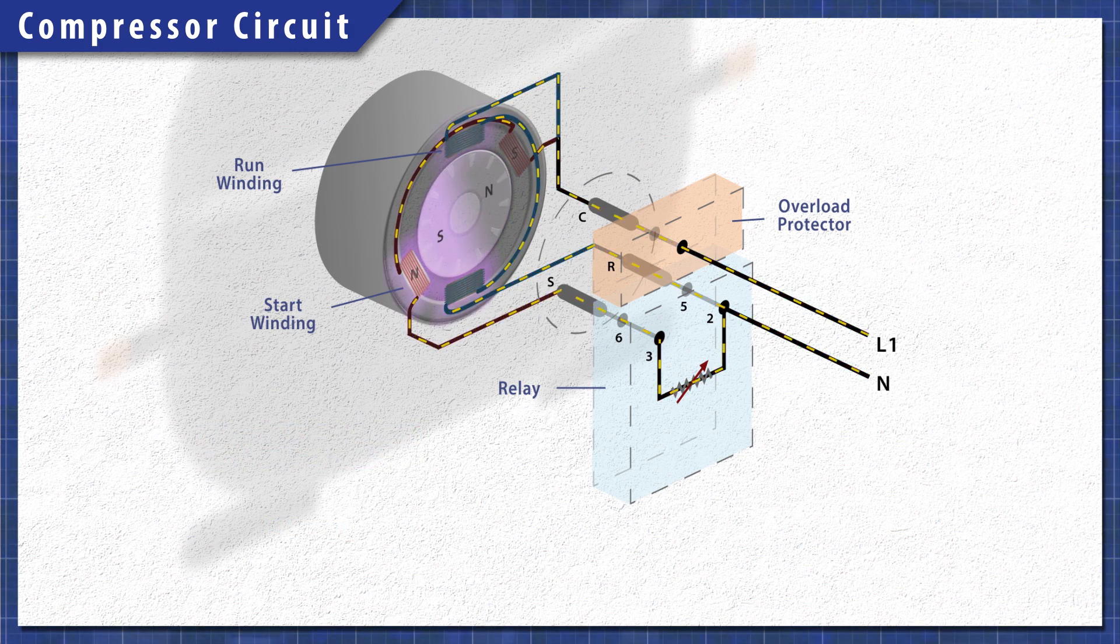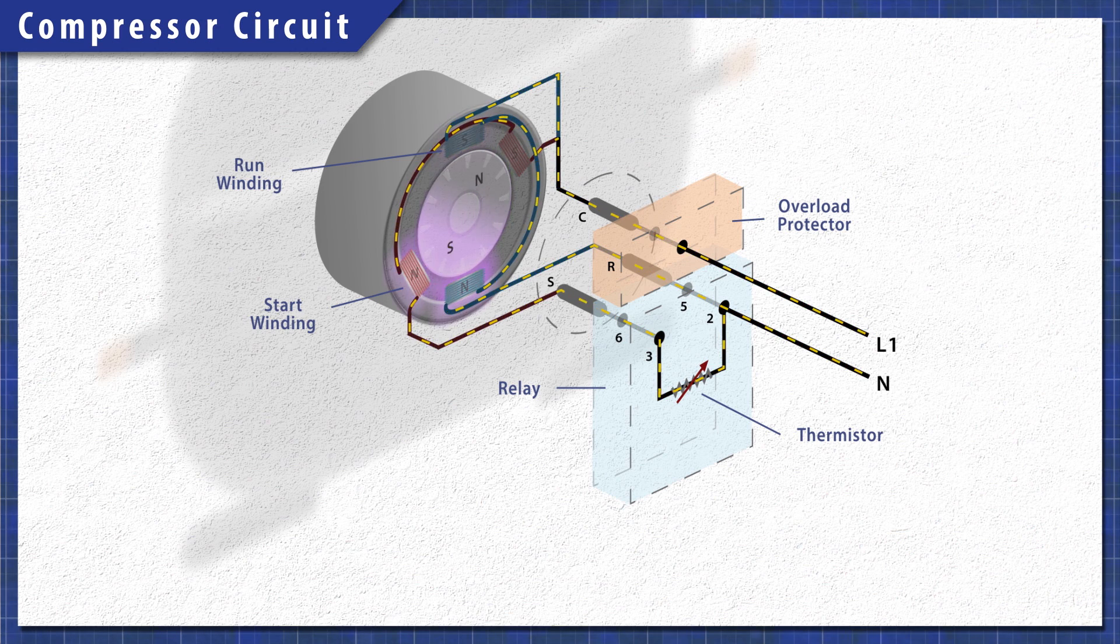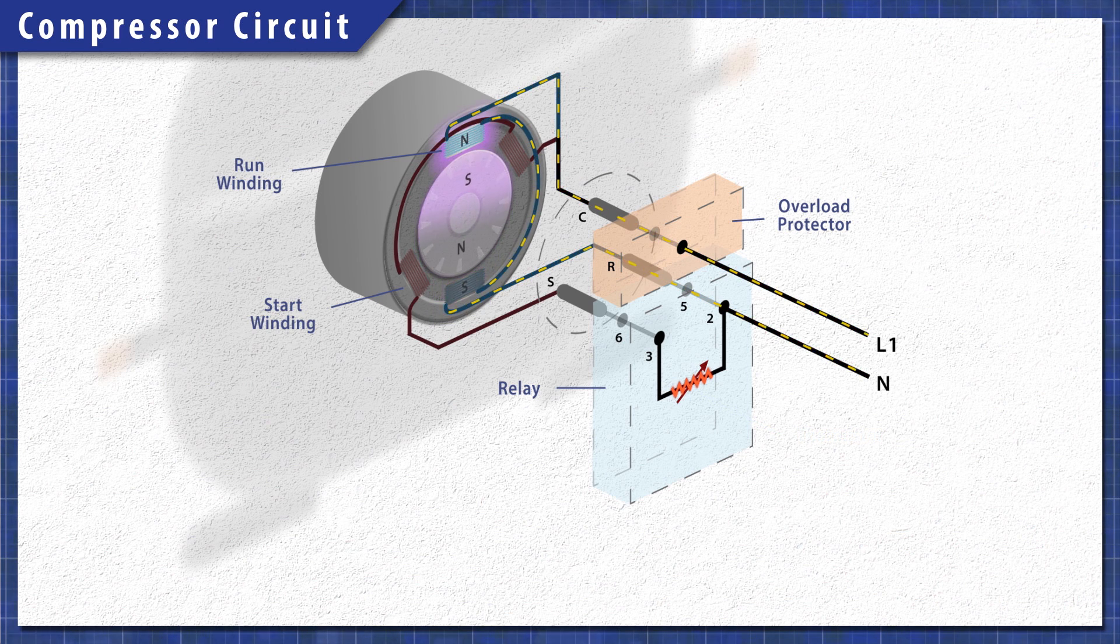Many refrigerators use a relay with a PTC thermistor. This heat sensitive resistor acts like a switch. As the motor starts, the thermistor heats up and disconnects power to the start winding. This prevents it from overheating.